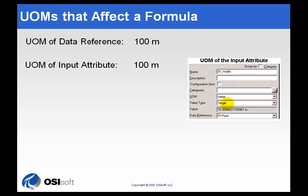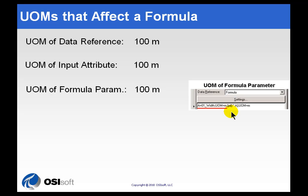In this example, we've just chosen meters all the way around. The third would be when you actually bring this Input Attribute into the Formula — at that point, you get to specify a Unit of Measure. If you look at our Shortcut here, identifying what the Formula is actually based on, we're seeing that A is defined as the Width with a Unit of Measure of meters. We specify the Unit of Measure on the Input and also on the Result.